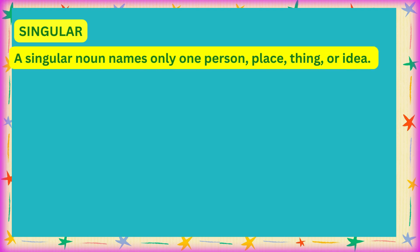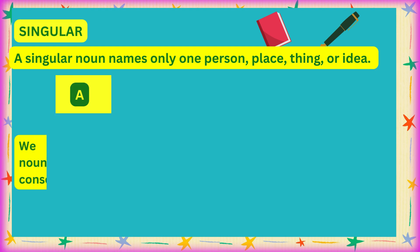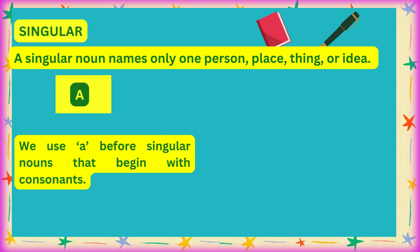A and AN are used with singular nouns only, not plural nouns. It is clear that if we talk about one thing, then we use a singular noun. A singular noun names only one person, place, thing, or idea. We use A before singular nouns that begin with consonants.